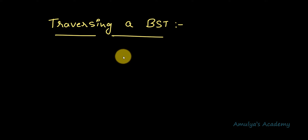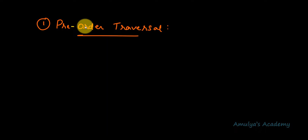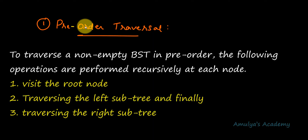The first traversal algorithm is pre-order traversal. When performing pre-order traversal of a BST, we assume the tree is non-empty — an empty tree has no nodes so there is nothing to traverse. To traverse a non-empty binary tree in pre-order, follow these steps: first visit the root node, next visit the left subtree, and finally visit the right subtree.